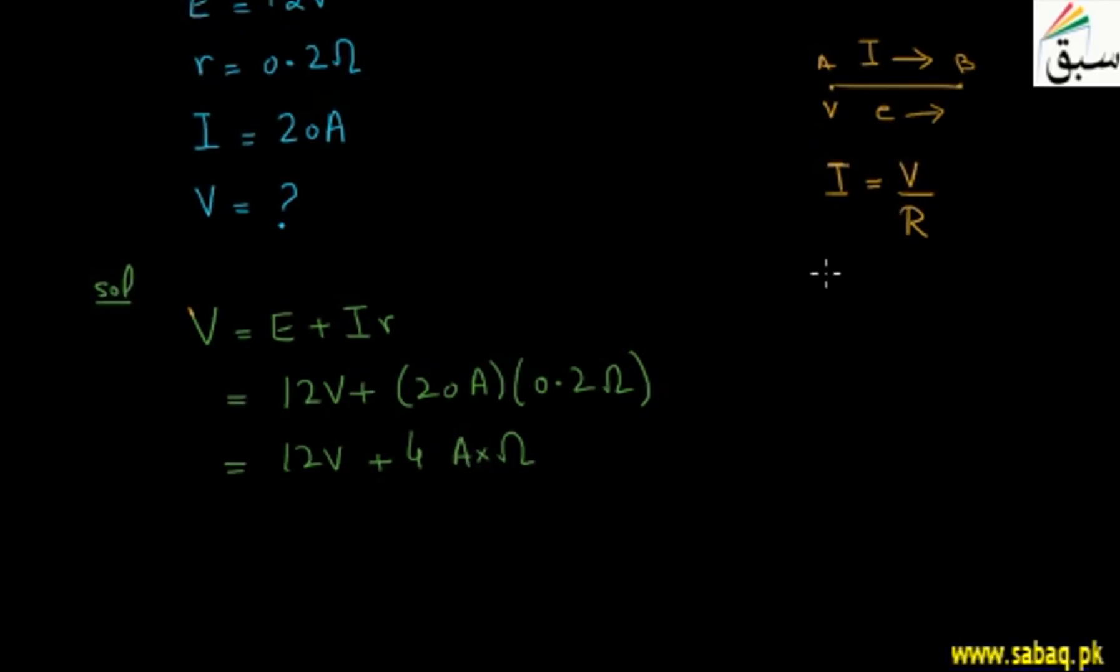Here we can say that 1 Ampere·Ohm is equal to 1 Volt. Volt is equal to Ampere·Ohm. Here we can see Ampere·Ohm is equal to V, so we have equal to 12V plus 4V.